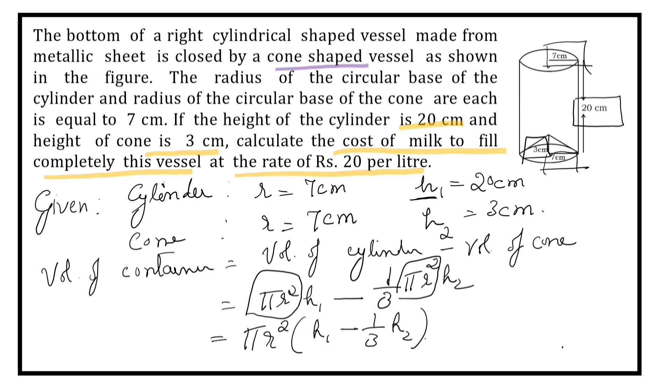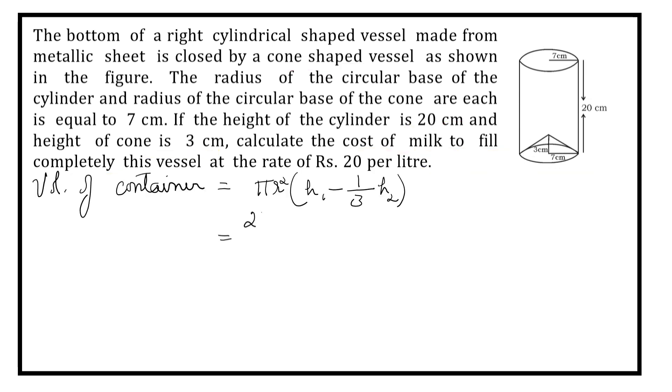Now let us substitute the values. What is the value of pi? 22 by 7. What is the value of radius of two things, cylinder as well as cone? That is 7, so 7 square. What is H1, height of the cylinder? It is 20 minus 1 by 3. H2, height of the cone, this is 3.